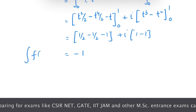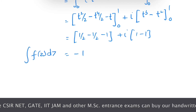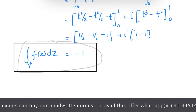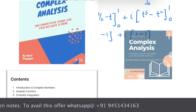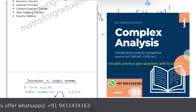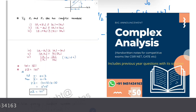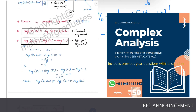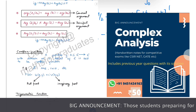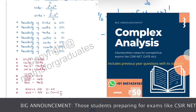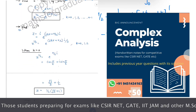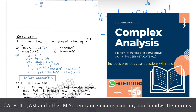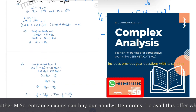So the integral of f(z) dz along contour γ is −1. This video ends here. Students preparing for exams like CSIR NET, GATE, and other MSc entrance examinations can buy our complex analysis handwritten notes for only Rs 50. Contact us through the WhatsApp number shown. Thank you for watching.